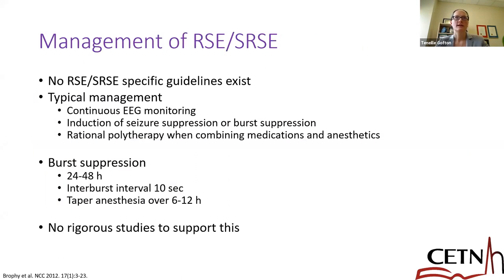When we look at refractory status epilepticus or super refractory status epilepticus, that's where we have less evidence. We don't have any specific guidelines, so we fall back on the guidelines for status epilepticus management such as those published in 2012 by the Neurocritical Care Society. Typically, we use continuous EEG monitoring, induction of seizure suppression or burst suppression on the EEG, and rational polytherapy combining medications and anesthetics.